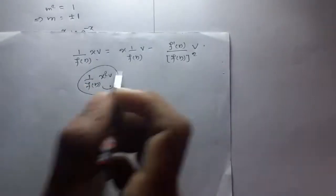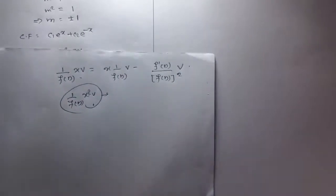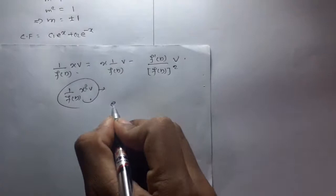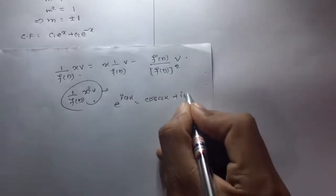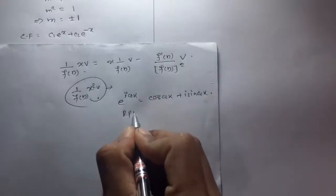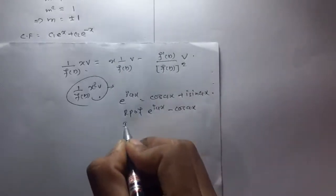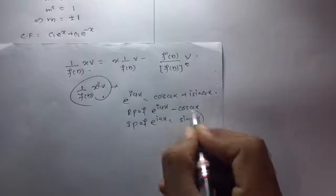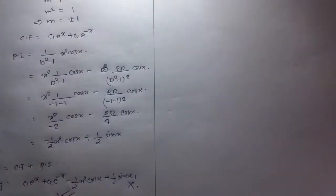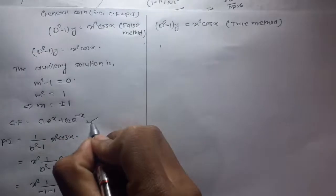Since we have no valid formula for 1/f(D) · x²·v directly, we are going to use a new concept. We use Euler's formula: e^(iax) = cos(ax) + i·sin(ax). The real part of e^(iax) is cos(ax) and the imaginary part is sin(ax). Using this concept, we solve the question. First we find the complementary function as before.